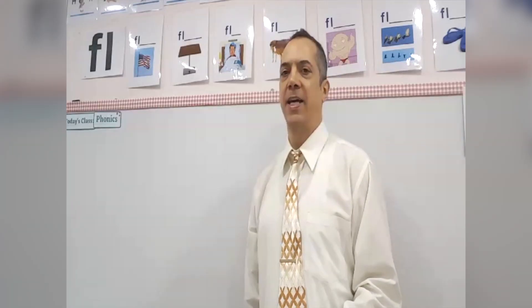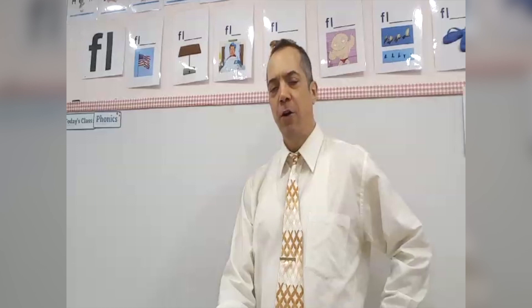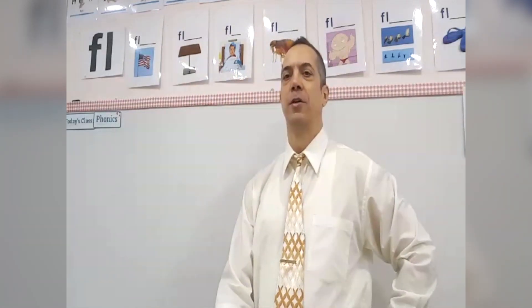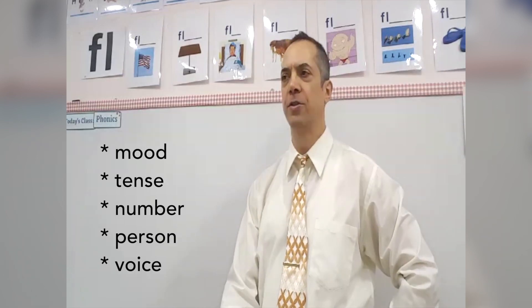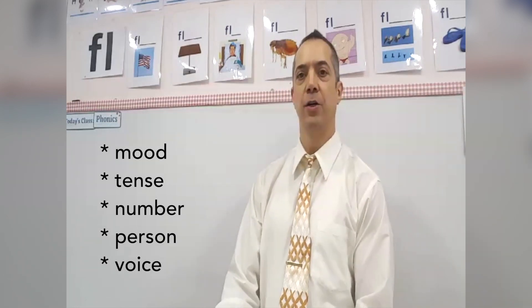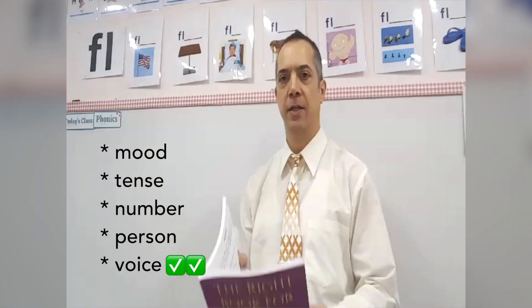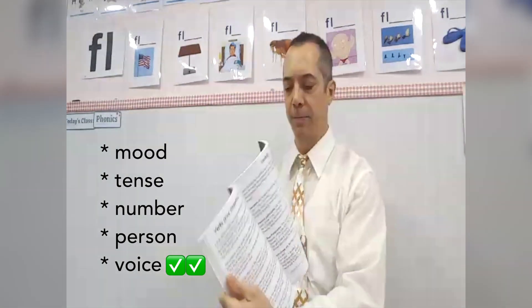Active and passive voice. Verbs have five properties: mood, tense, number, person, and voice. This video is about voice. I'm going to read one page from my grammar book.